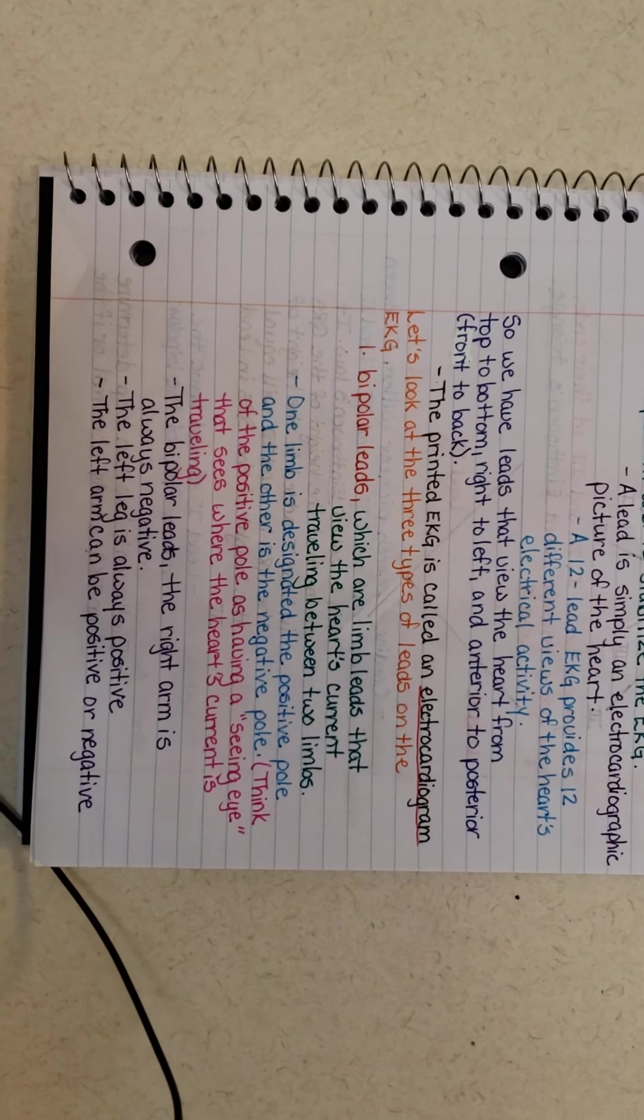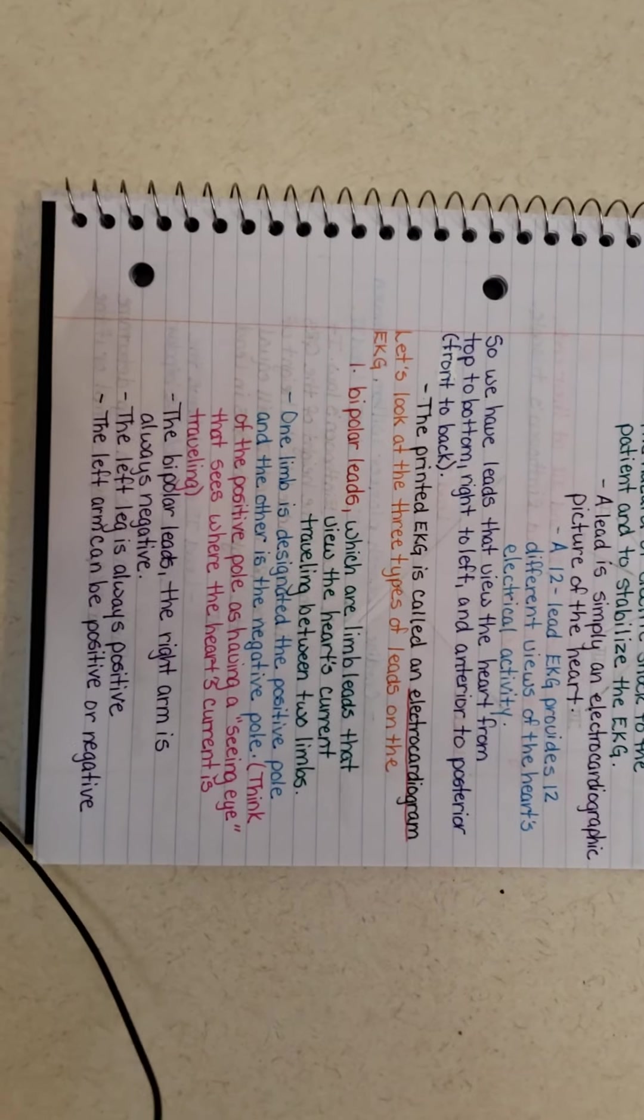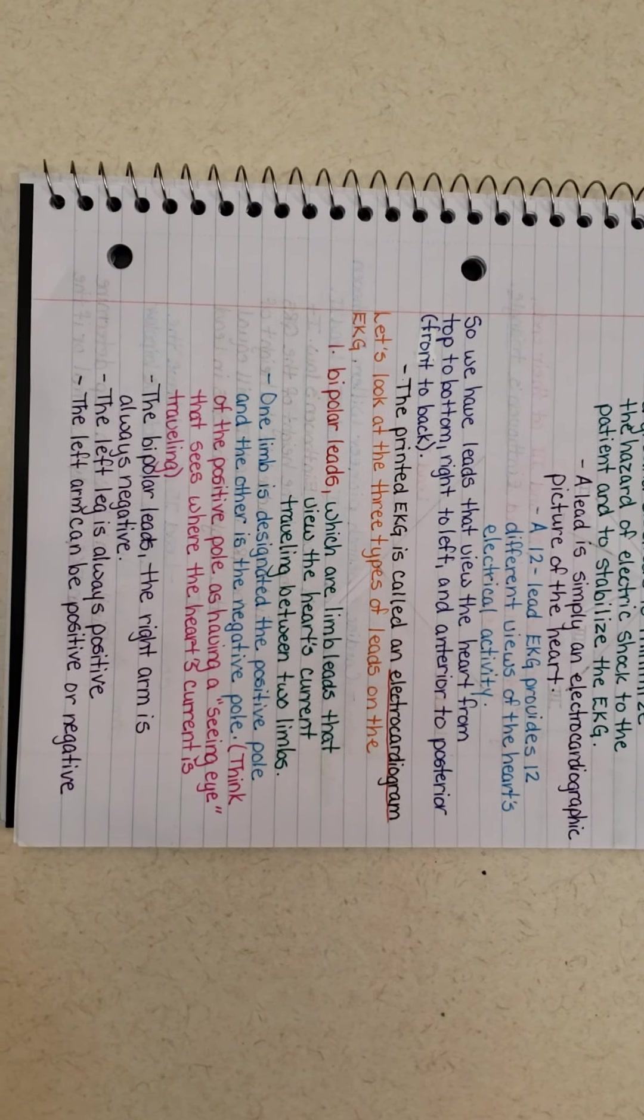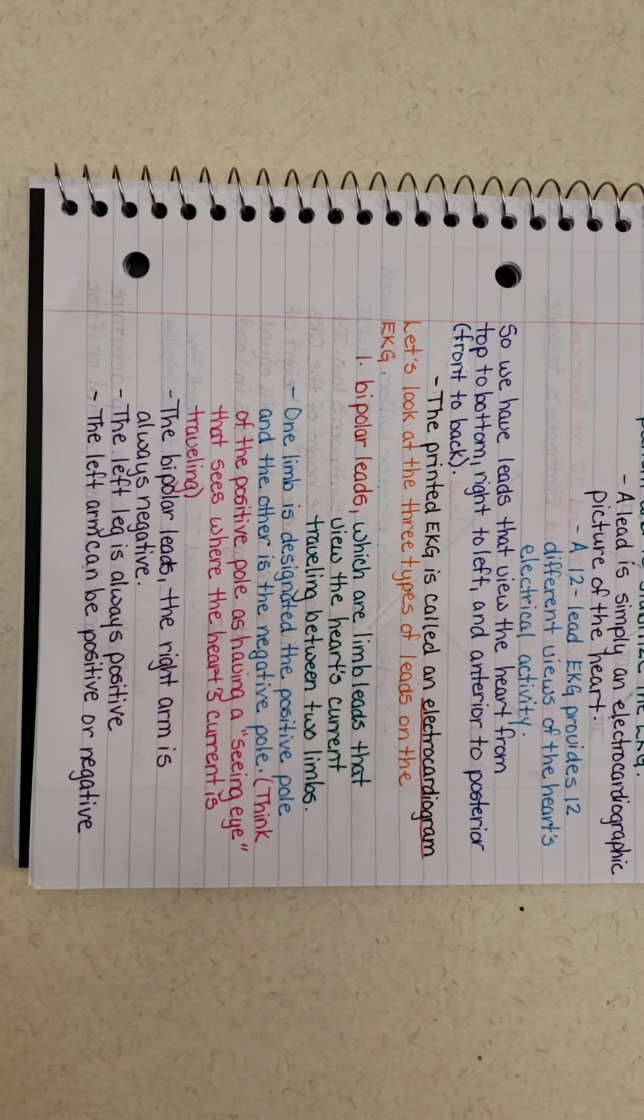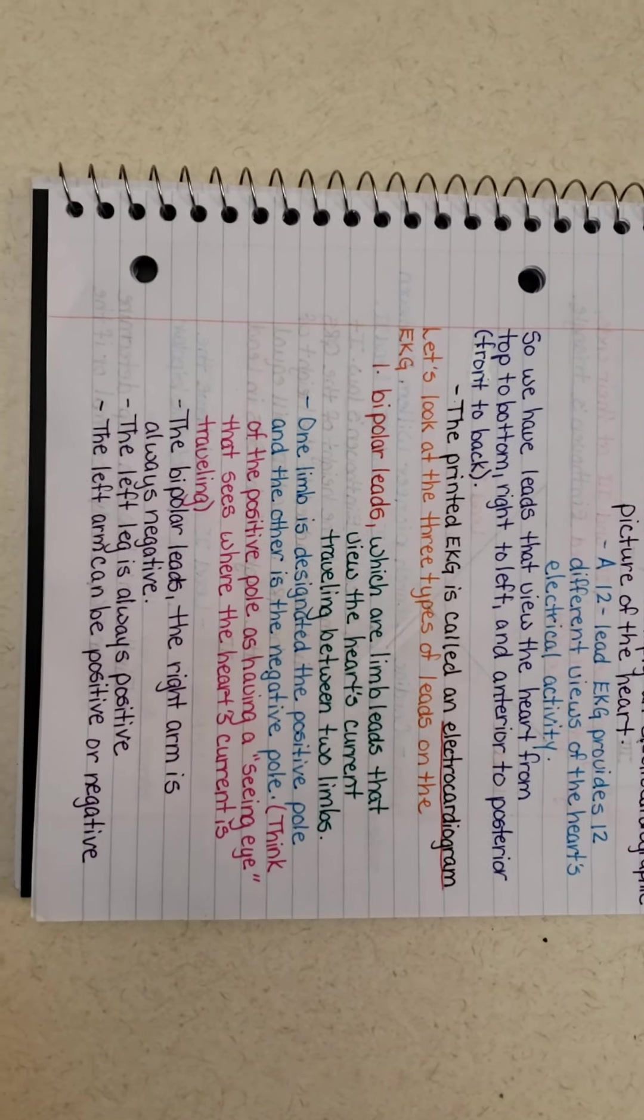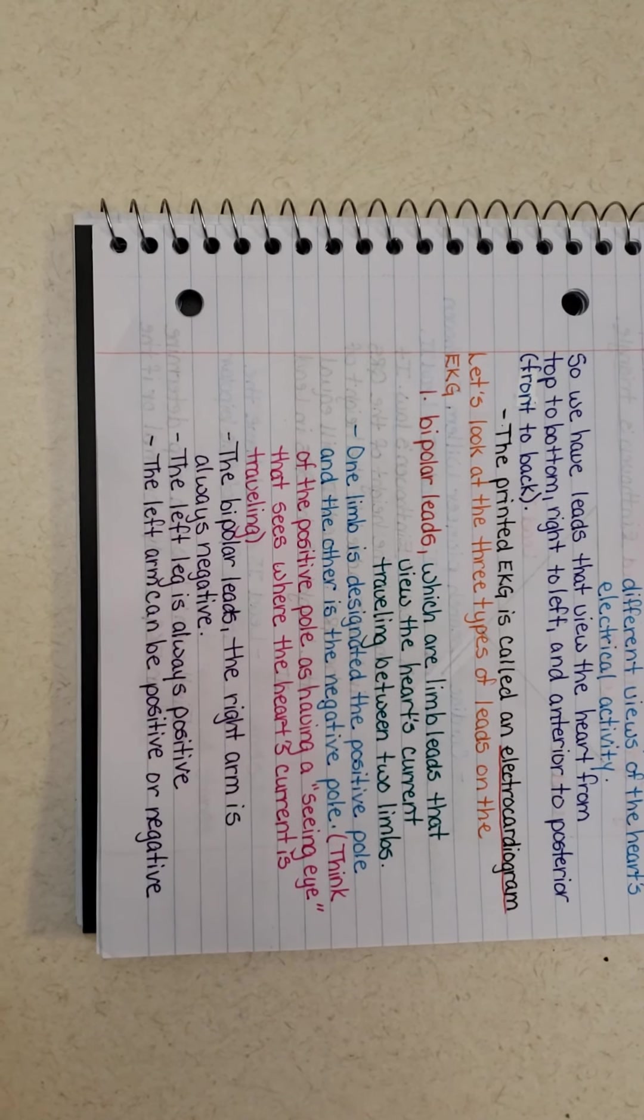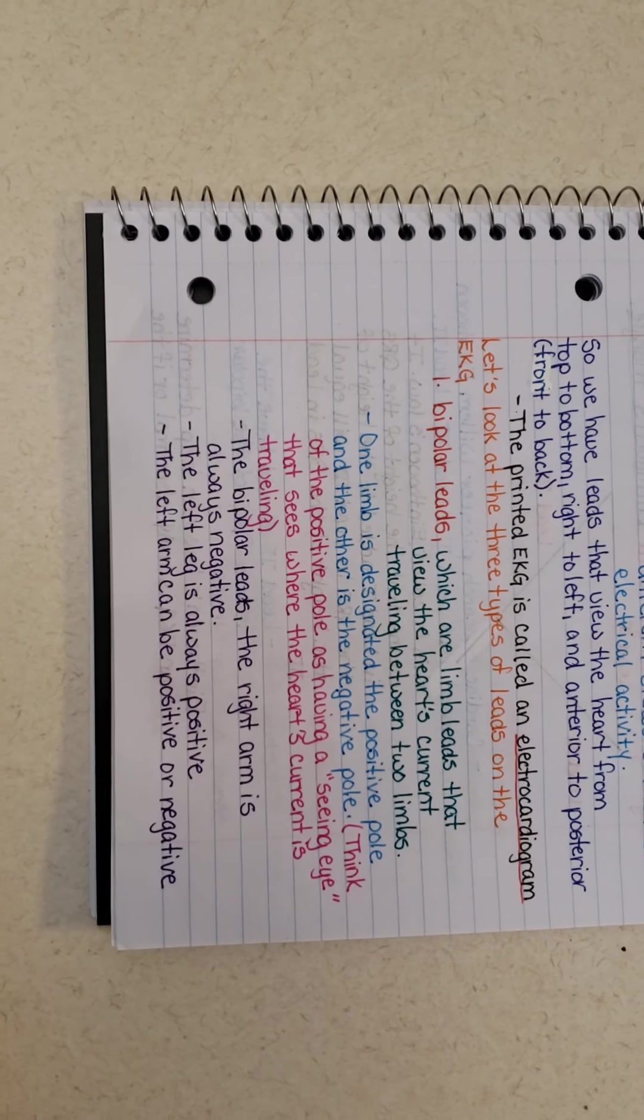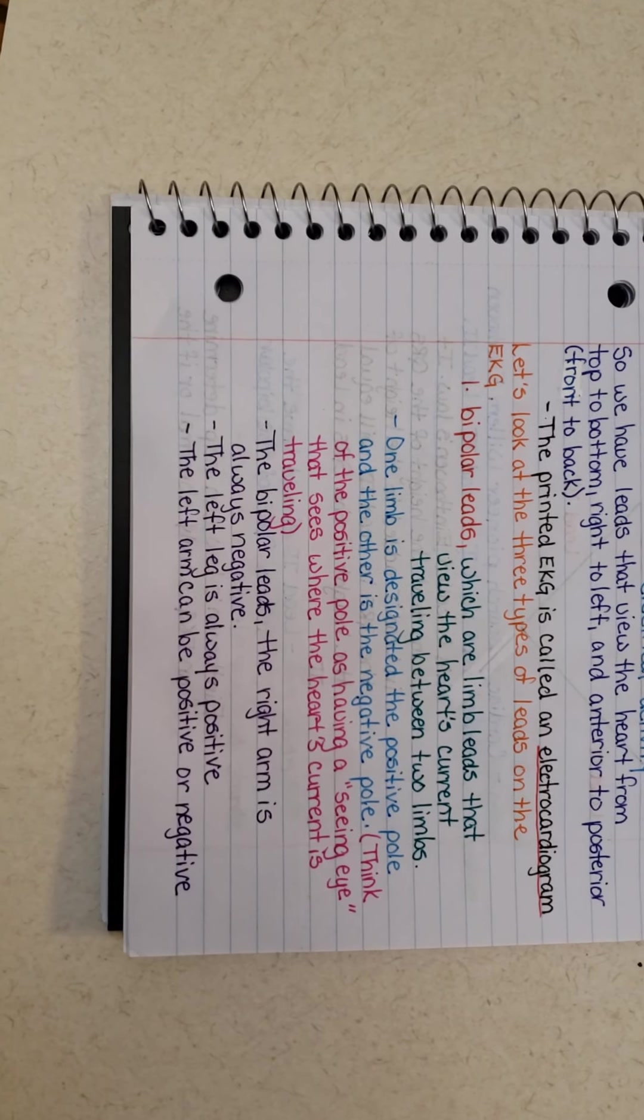There are three different types of leads on the EKG. You have your bipolar leads, which are limb leads that view the heart's current traveling between two limbs. You have one limb designated the positive pole and the other limb is the negative pole.